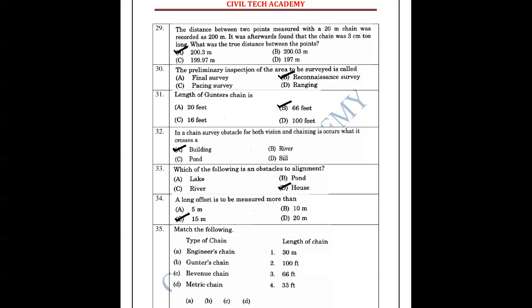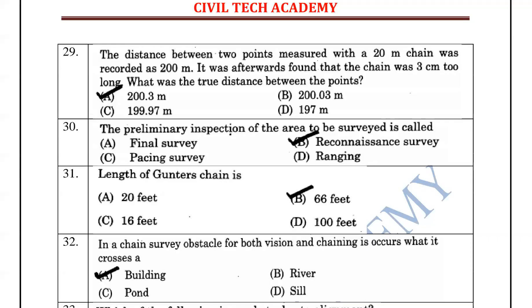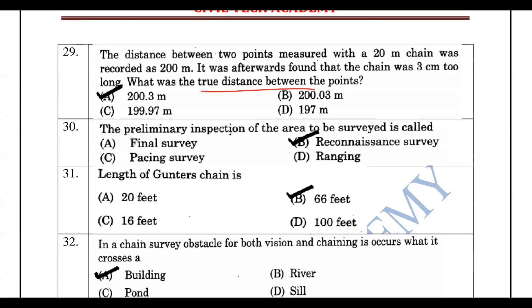The next question: a chain of 20 m is found to be 3 cm too long. If the chain is too long, the error is positive, and if too long, the correction is negative but the correction applied is positive.